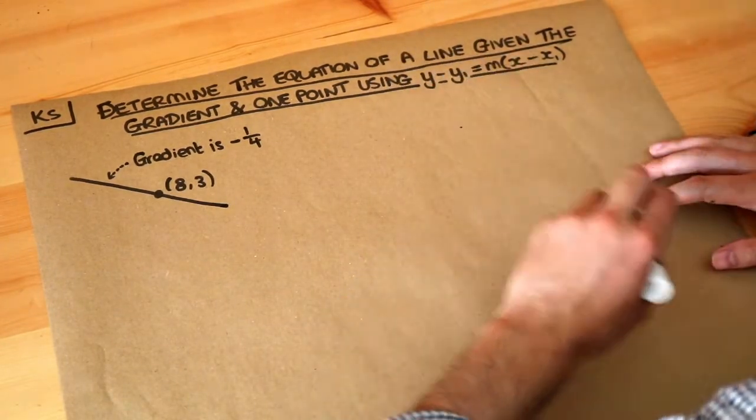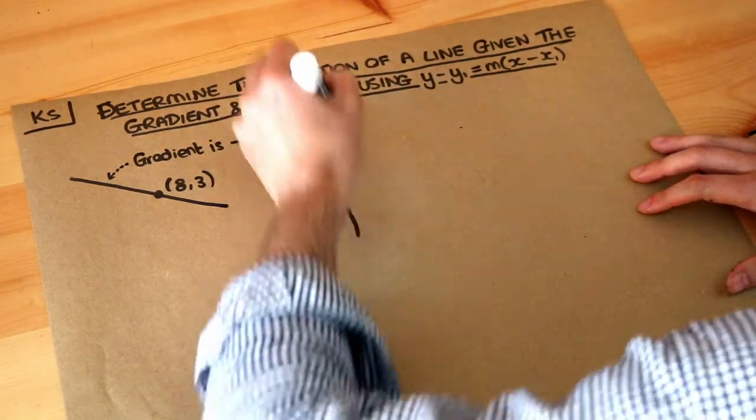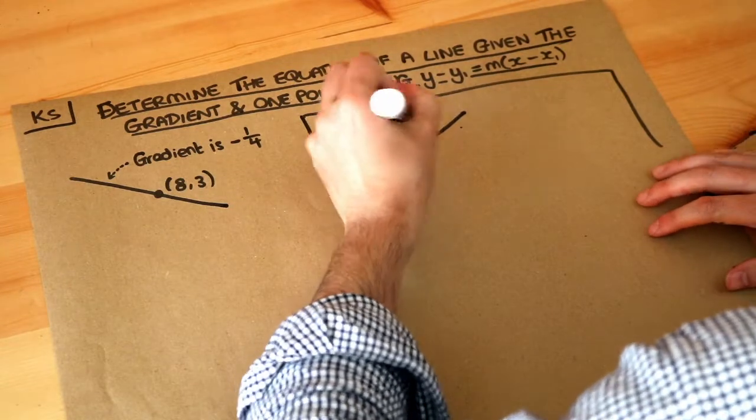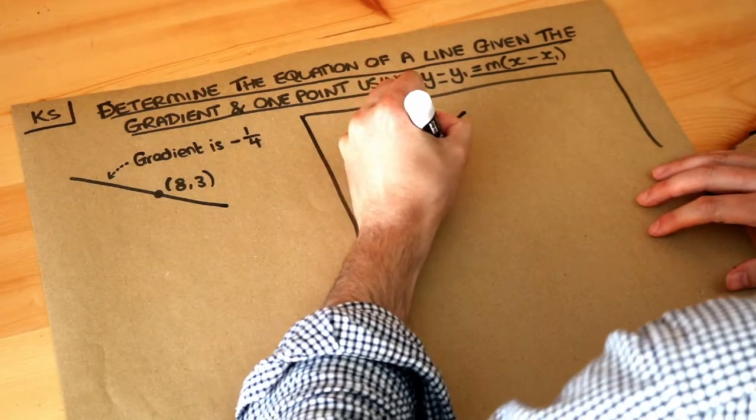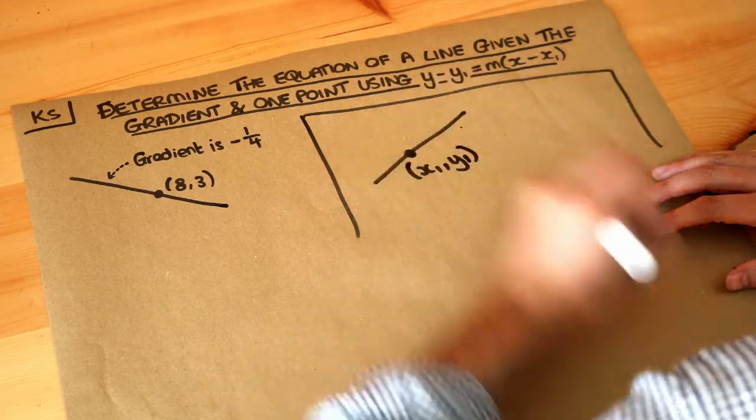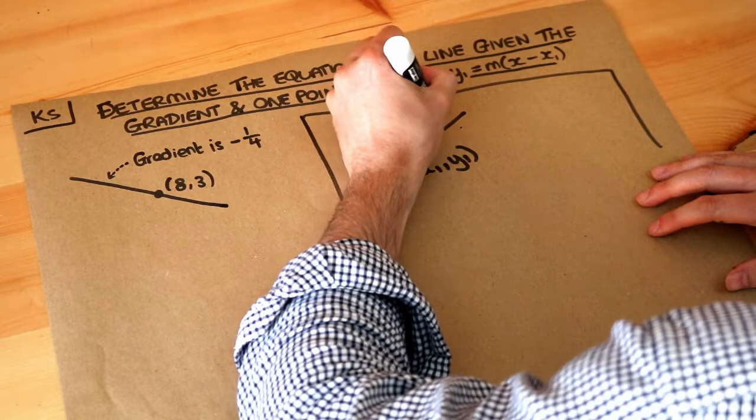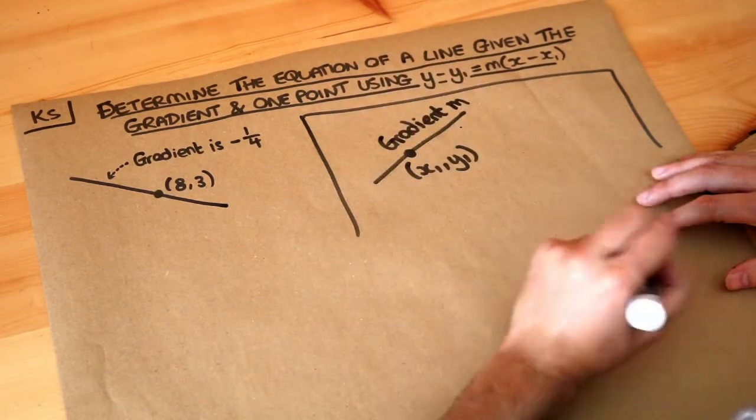So how does this formula work? Well, in general, if you have a straight line and you've got some fixed point x1, y1 that it goes through and you've got some known gradient of the line, so the gradient is m, then the equation of the line is y minus y1 using that fixed y1 there equals m brackets x minus x1.